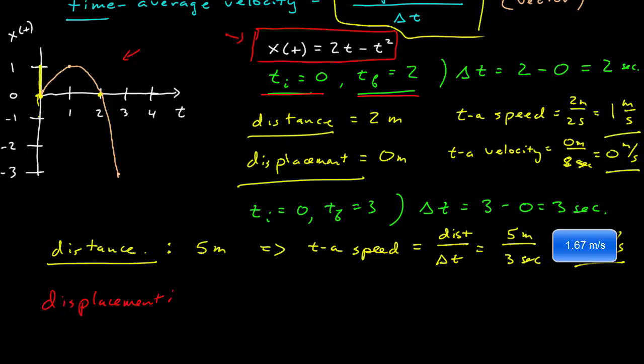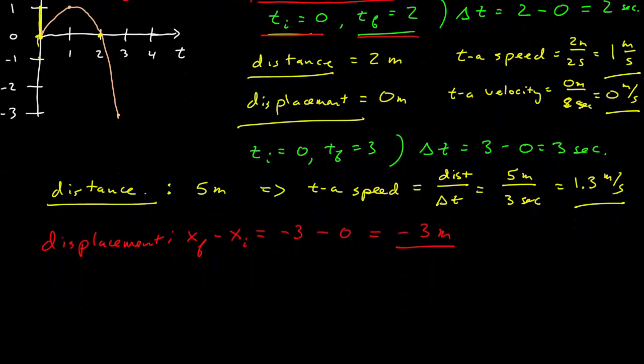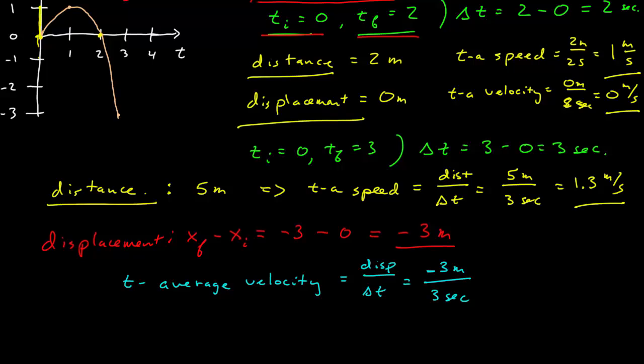Again, for displacement, well, that's the final position minus the initial position. The final position is negative 3. The initial position was 0, so the displacement was negative 3 meters. That's a vector. It has a magnitude of 3 meters, and it's pointing in the negative x direction. And so now we can calculate the average velocity, which is the displacement over the time interval, or negative 3 meters over 3 seconds, or negative 1 meter per second.